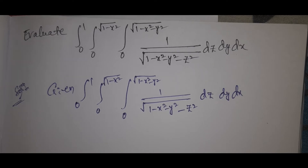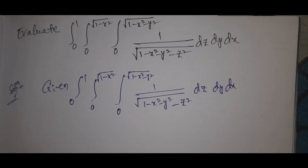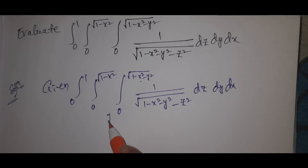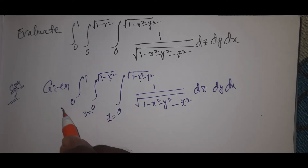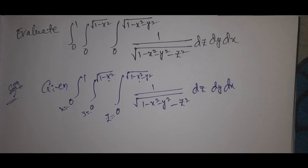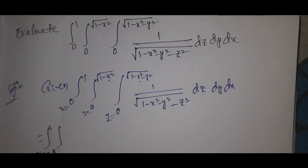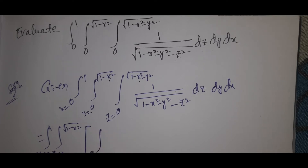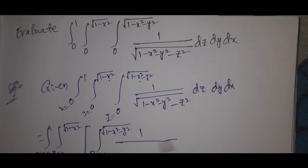If you look at the x limits, y limits, and z limits: x goes from 0 to 1, y goes from 0 to √(1−x²), and z goes from 0 to √(1−x²−y²).